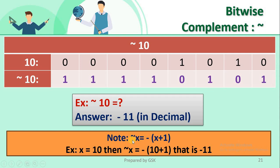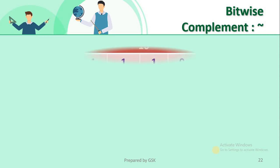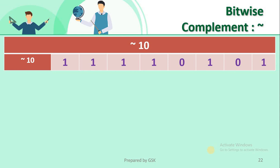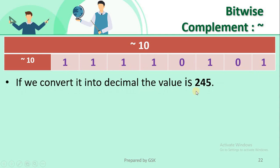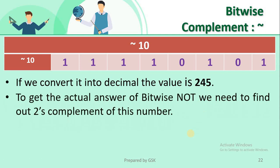The formula for bitwise NOT is: ~x = -(x + 1). So for x = 10, ~10 = -(10 + 1) = -11. However, there is an interesting twist: if you directly convert the flipped binary bits of 10 to decimal, you get 245, not -11. To get the actual answer of bitwise NOT, we need to find the 2's complement of the number. That is the actual mechanism implemented internally when we use bitwise complement.